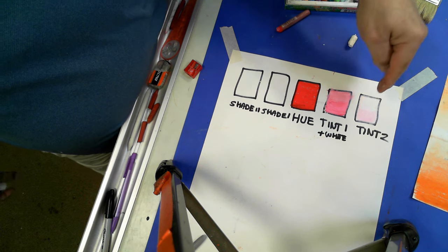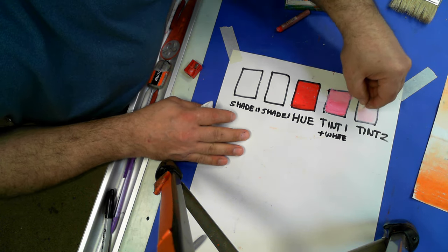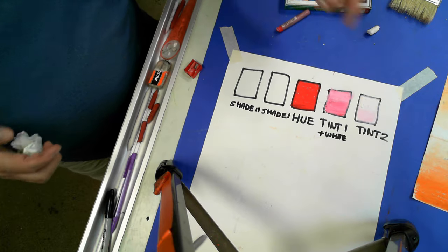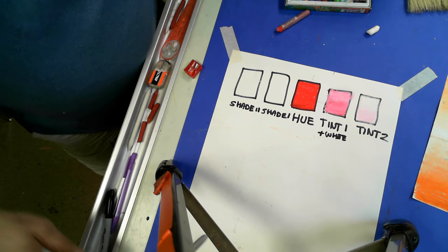So look at that. I got tint one, tint two, tint three, tint four. And that's almost white. So that's how I create my tints.